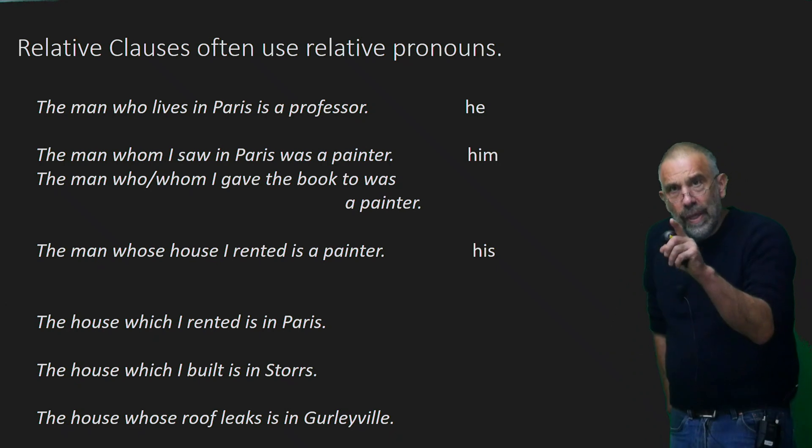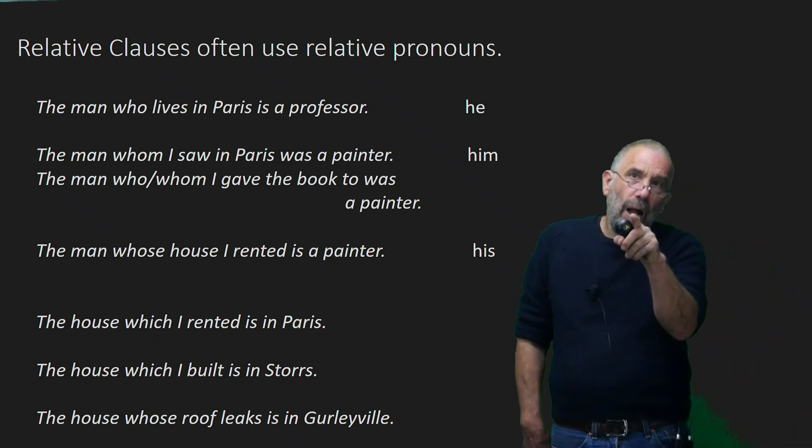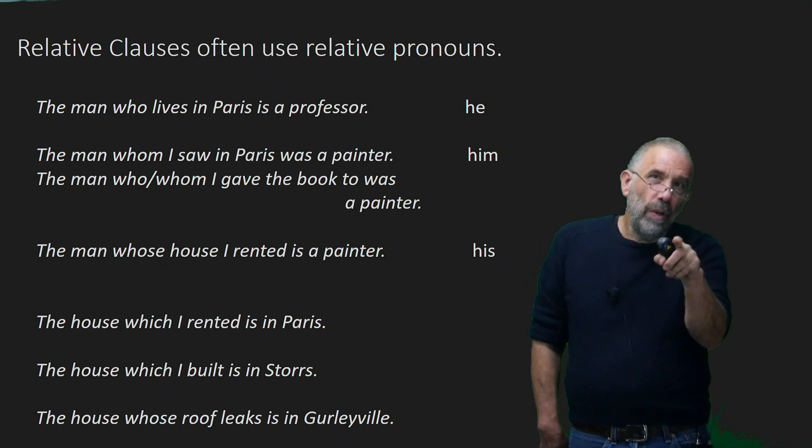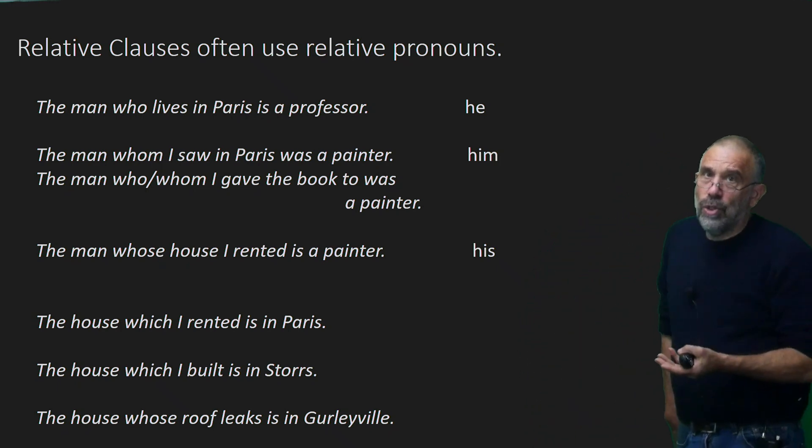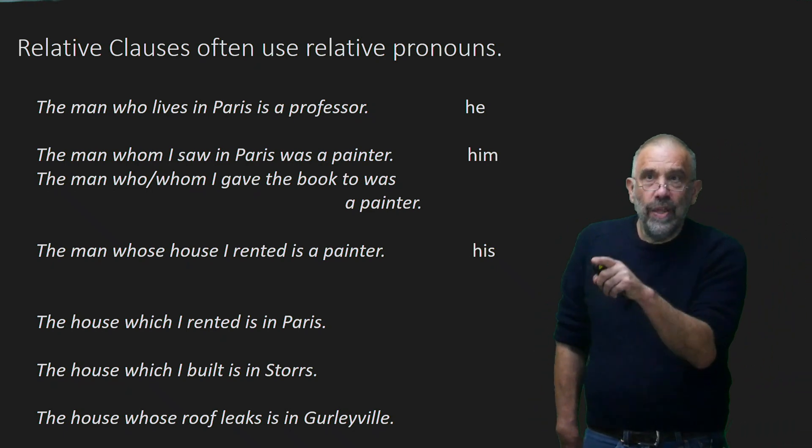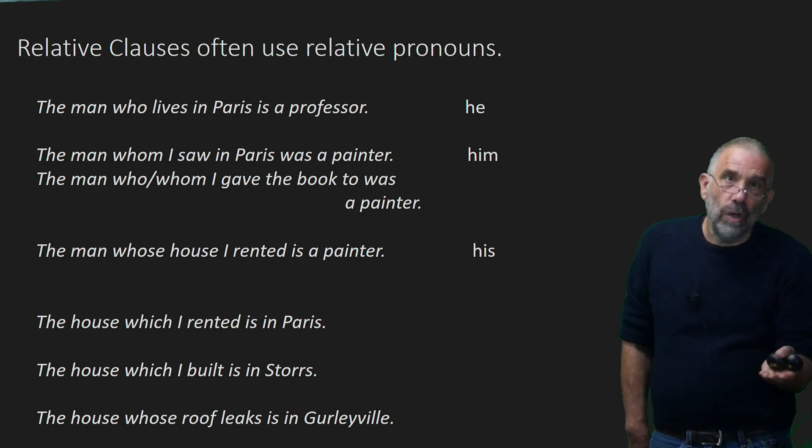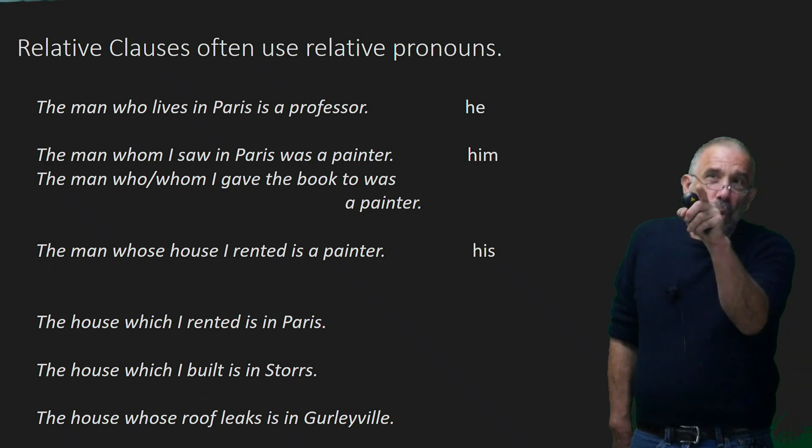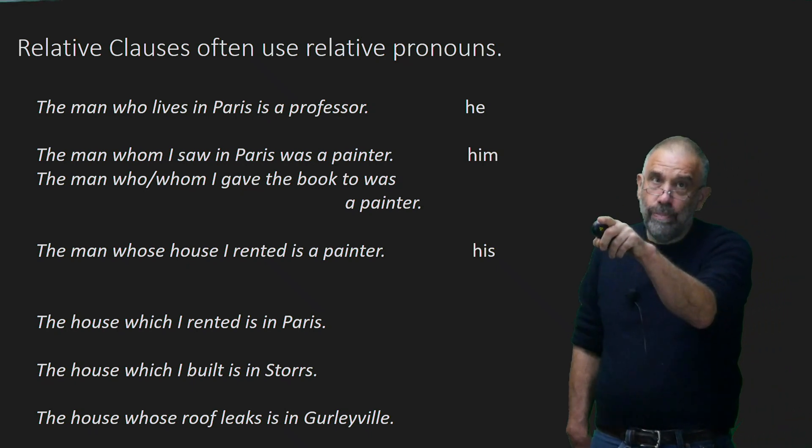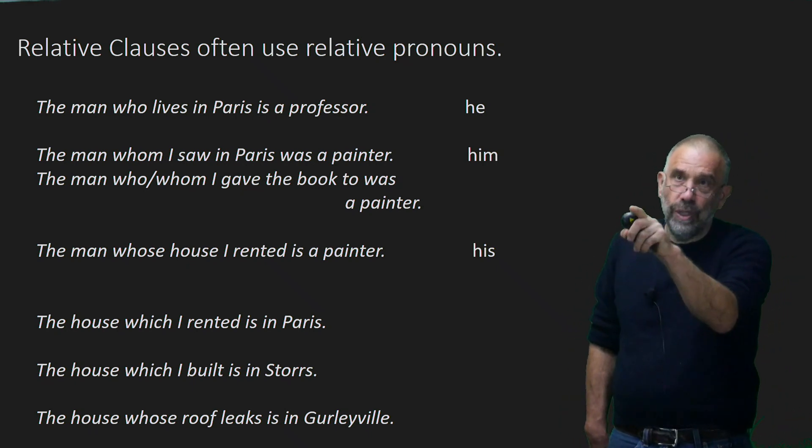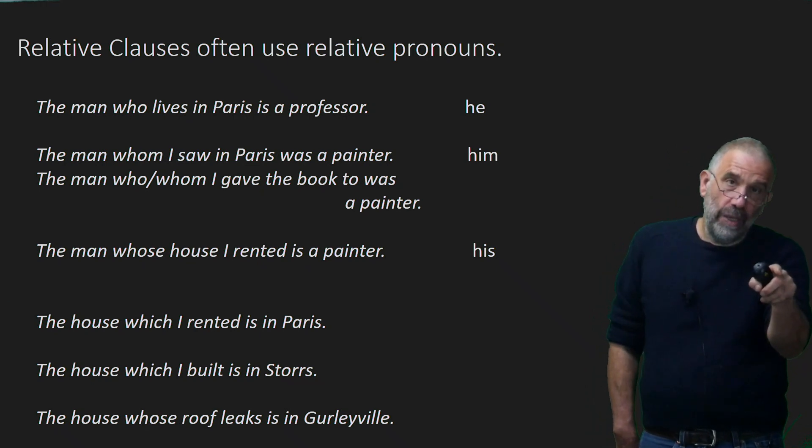Now, the man who or whom I gave the book to was a painter. That's one that's changing in the language at the moment. I probably would say the man who I gave the book to is a or was a painter. But the whom there could be interpreted as the object of the preposition.